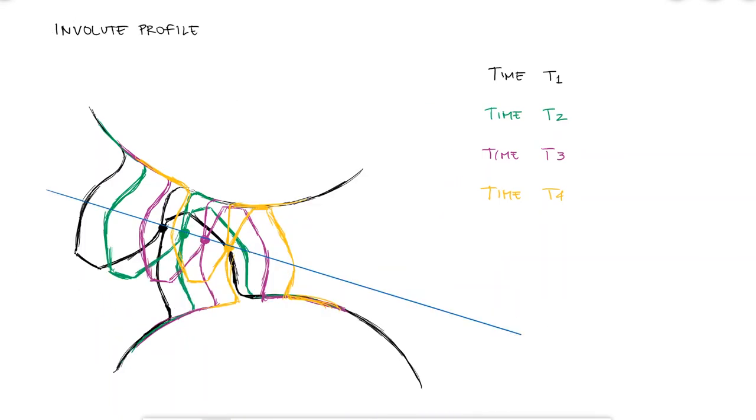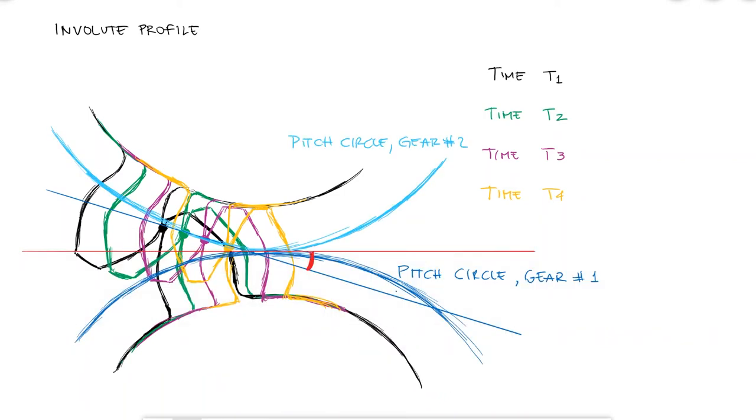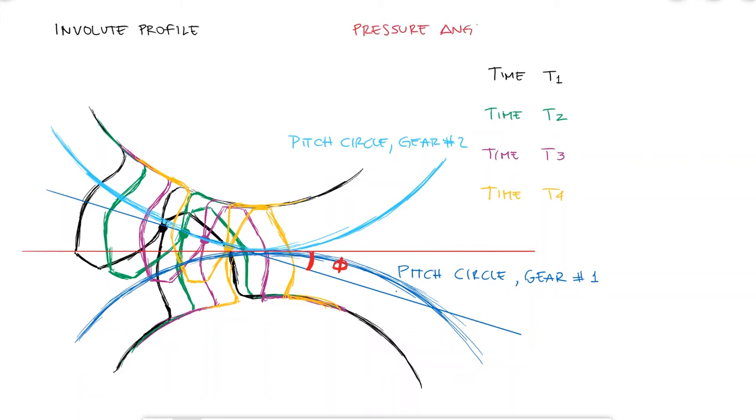This line is known as the line of action, and what's important about it is that the angle between it and the tangent line to where the pitch circles meet is called the pressure angle phi.